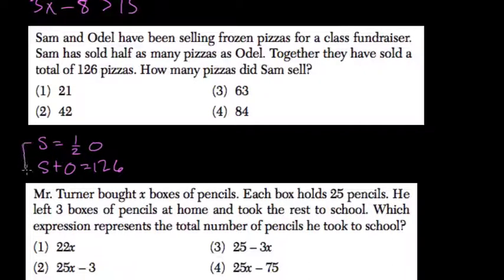Well, let's plug in this into the second equation. Sam equals a half of Odell's, and Sam plus Odell is 126. So instead of Sam plus Odell, I'll substitute. We have half Odell plus Odell equals 126.